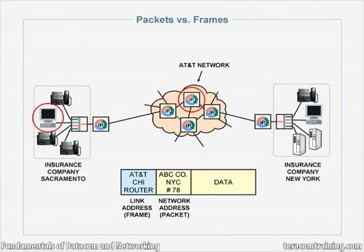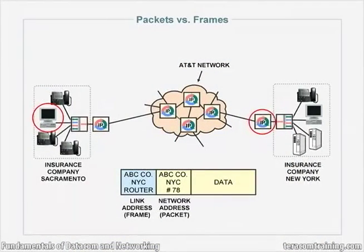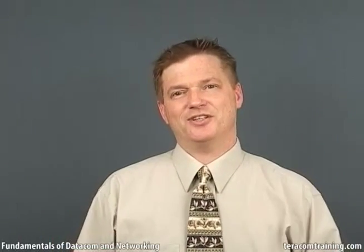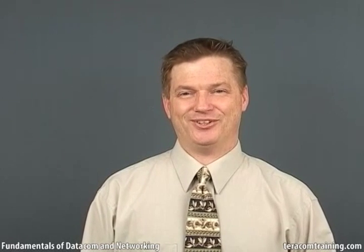The Chicago router eventually sends it to the AT&T router in New York City. That one looks up its routing table and finds: if you want to go anywhere at ABC Insurance Company New York City, you have to go to ABC Insurance Company's router in New York City. So it sends the packet in a frame to that router, and then that router is responsible for figuring out which is computer number 78 on the local cabling. The key idea: the address on the packet never changes — that's the final destination address. The address on the frame changes at every hop because it indicates where the packet is going next on that particular piece of cable.